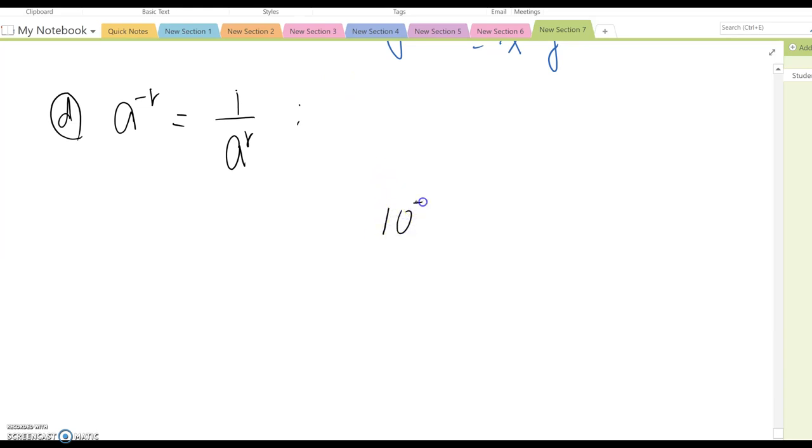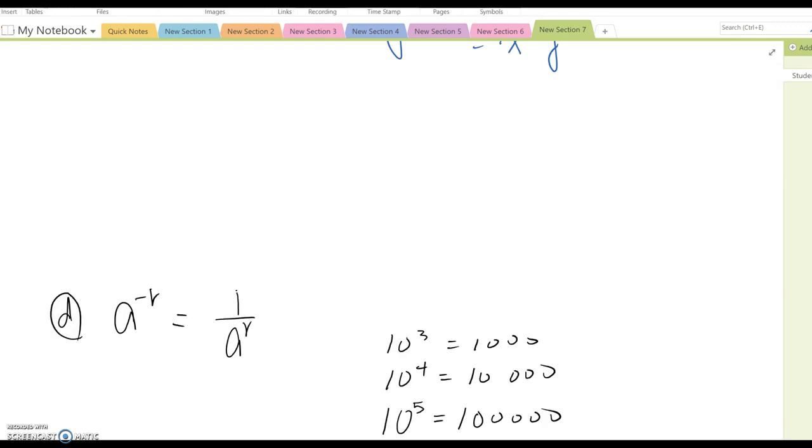So, what is 10 to the 5th power? This is 100,000. And 10 to the 4th power is 10,000. And 10 cubed is 1,000. Something like that, right? Okay. So, I am going to make a little bit more space for this one. So, now, 10 squared becomes 100. And 10 to the 1 power equal to 10 here.